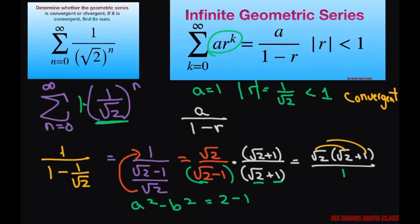Now let's go ahead and clean that up. Square root of 2 times square root of 2 is 2 plus square root of 2 times 1 is square root of 2. So this is what it converges to.